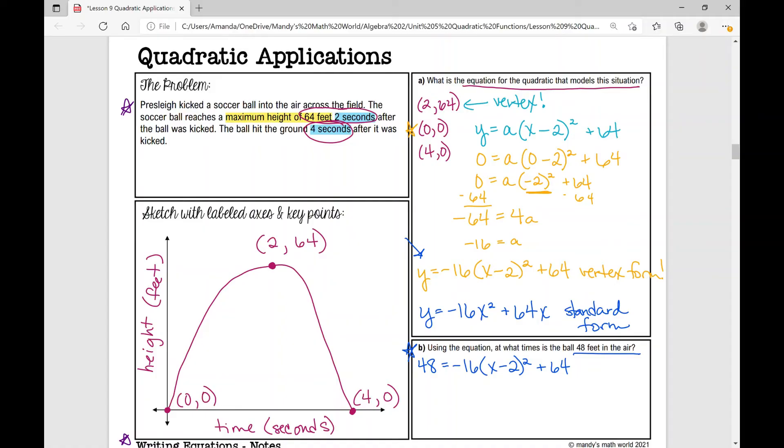So if I'm solving for x, the first thing that I'm going to do is I'm going to subtract 64 from both sides, and I get negative 16 equals negative 16 times x minus two squared. And now I can divide by negative 16, and I get one equals x minus two squared.